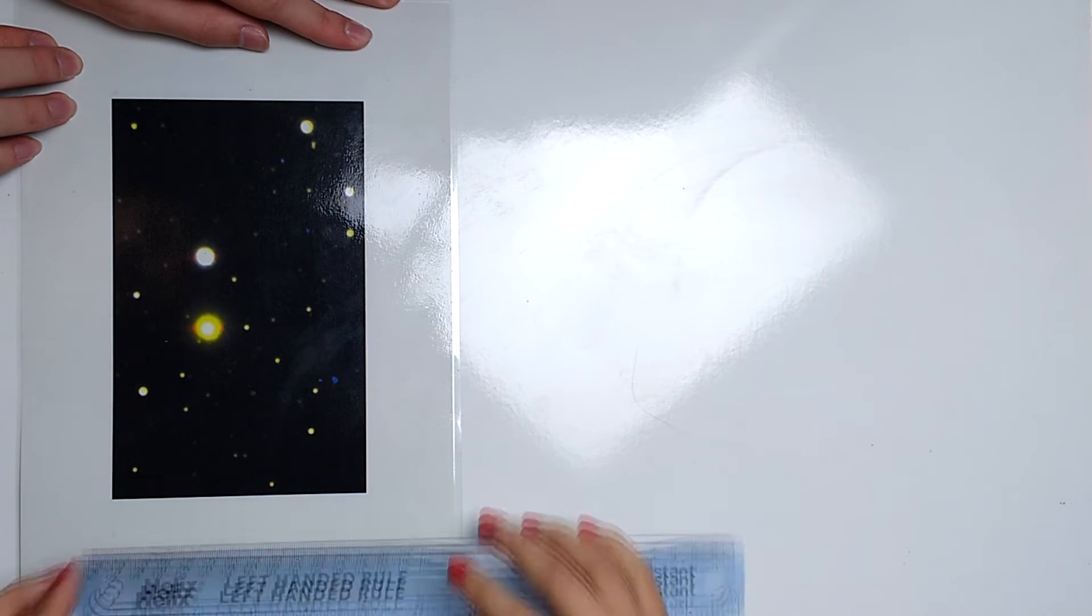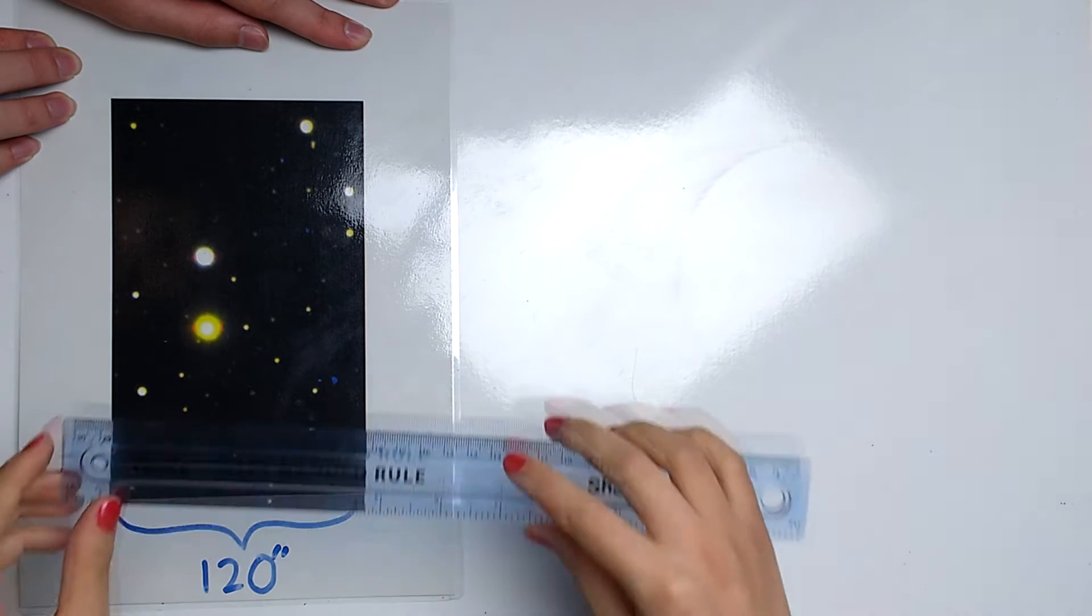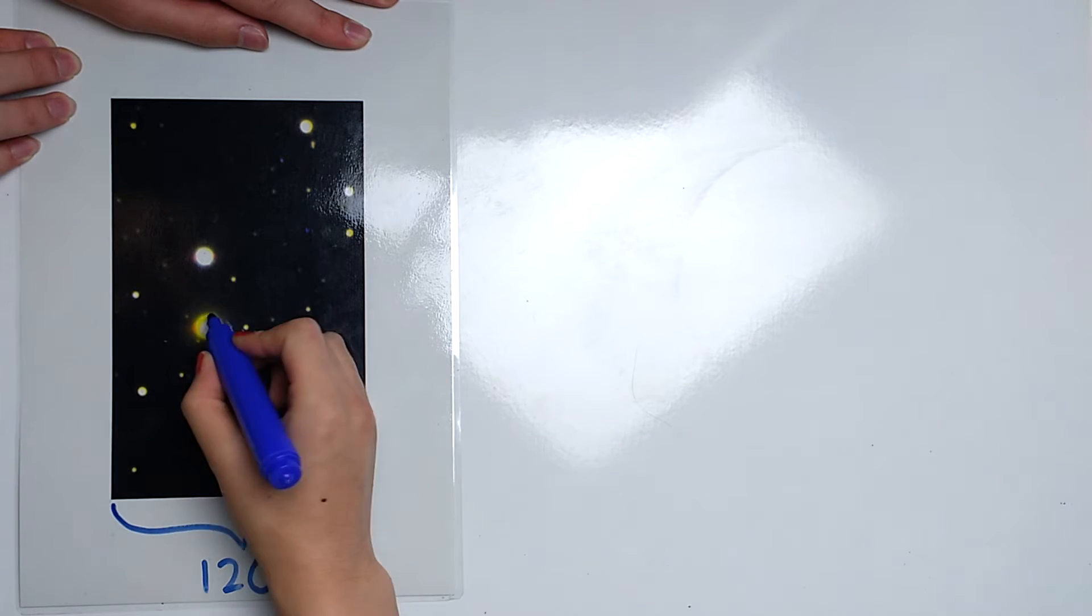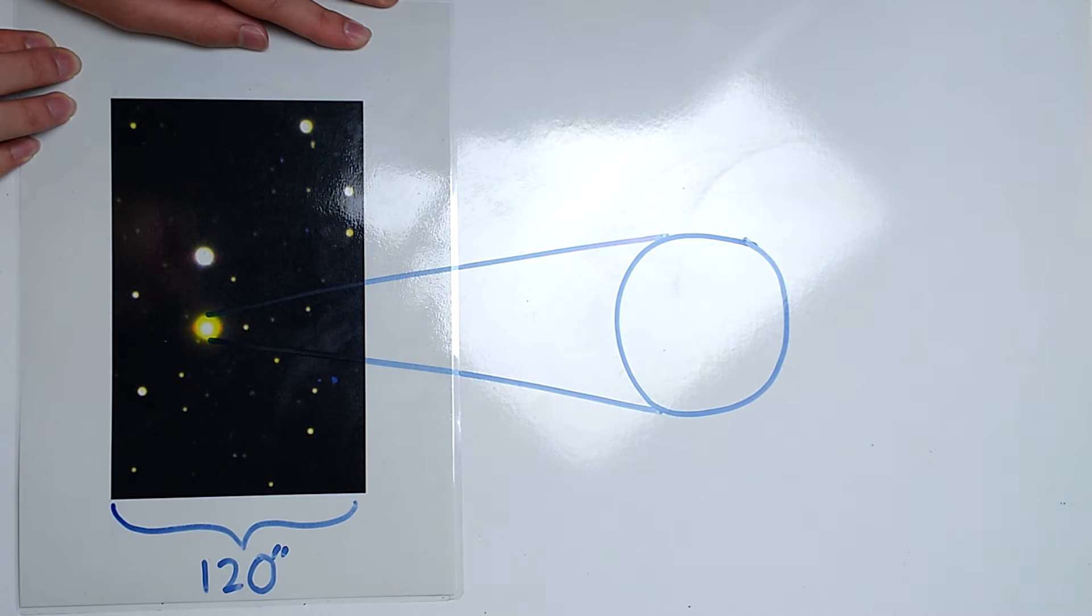Here's mine. This picture is approximately 2 arcminutes or 120 arcseconds across. Do you see that bright star in the centre? Well, if we measure its radius, we get more than 3 arcseconds. This is 15 times worse than our predictions.